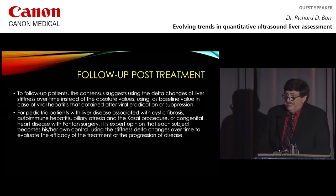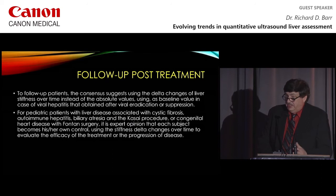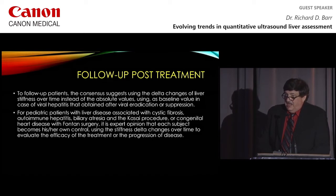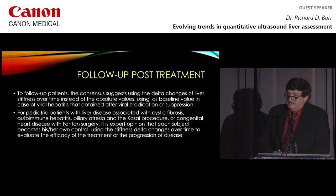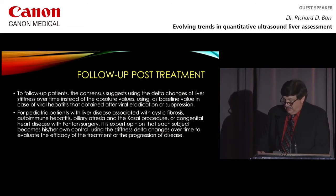In terms of follow-up post-treatment, we now have good treatments for hepatitis B and C, so we don't feel we need cutoff values to decide when these patients get treated — they should just get treated. To follow these patients, our consensus suggests using the delta change of liver stiffness over time instead of absolute values, using each person as their own baseline for viral hepatitis, after eradication or suppression with treatment. For pediatric patients with liver disease associated with cystic fibrosis, autoimmune hepatitis, biliary atresia, Kasai procedure, or congenital heart disease with Fontan surgery, expert opinion is that each subject becomes his or her own control using stiffness delta changes over time.